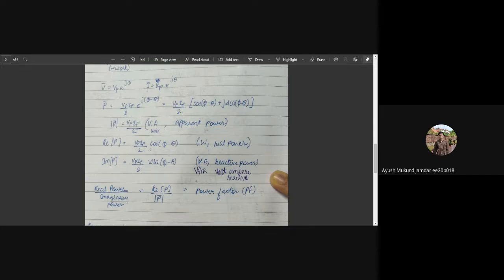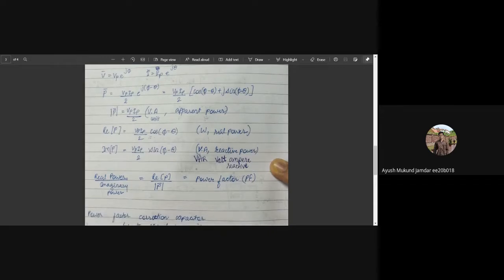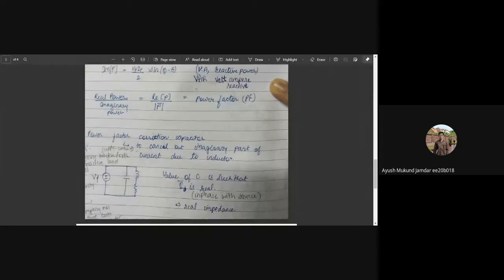The imaginary part of this complex power is VP IP by 2 sin phi minus theta, called the reactive power. The unit is VA or also represented as VAR, volt ampere reactive. These are terminologies we must be familiar with. The power factor is another term defined as the real part of the power divided by the modulus of the power, basically cos phi minus theta, the cosine of the phase difference.